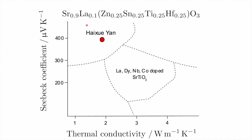Haishu Yan decided it would be interesting to make a ceramic based on a high-entropy concept. If we mix equal amounts of ingredients then we maximize the entropy — so here we have zinc, tin, titanium, and hafnium mixed in equal amounts on a particular sub-lattice of this oxide. That enabled him to obtain a single-phase material.